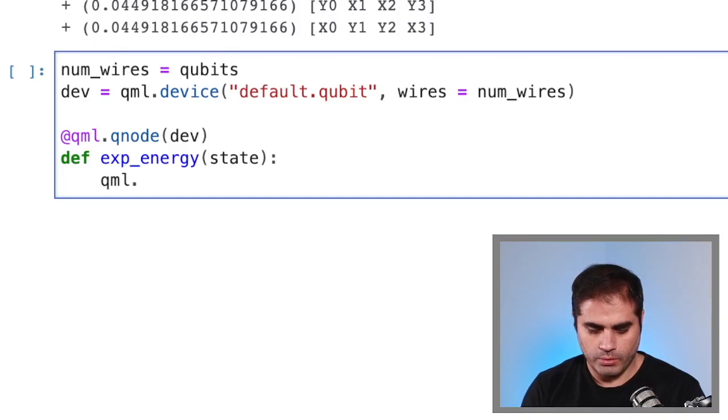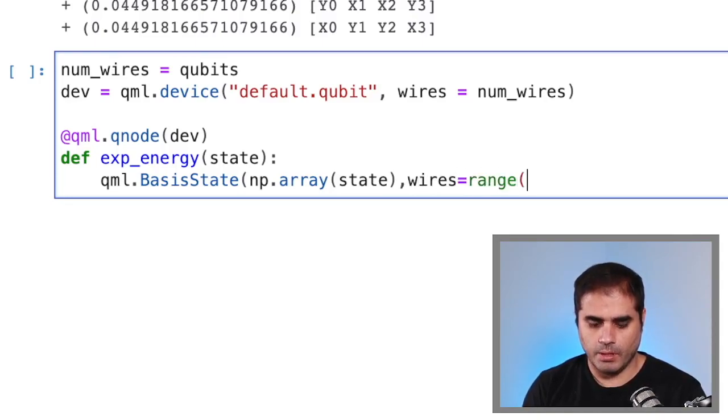Now we need to prepare this state. So we do this through the function qml.BasisState. And then we put np.array. This function takes an np array. So let's just make sure that we are transforming whatever array we put in, into an np array. And this will act on all the wires. So wires is equal to range num_wires.